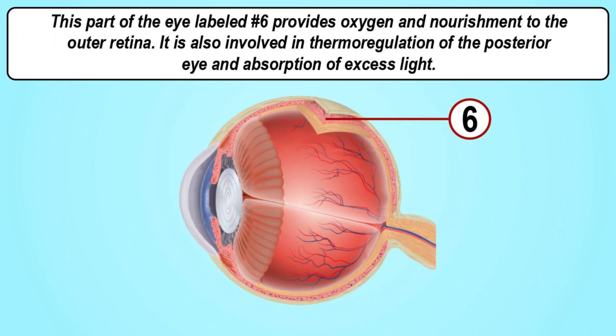This part of the eye labeled number six provides oxygen and nourishment to the outer retina. It is also involved in thermoregulation of the posterior eye and absorption of excess light.